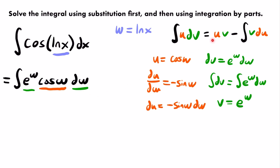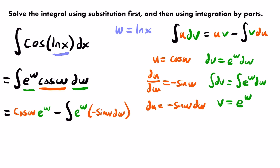Now we rewrite the integral using the integration by parts formula. We get u times v, which is cosine w times e^w, minus the integral of v du, which is e^w times negative sine w dw. The two negatives cancel, giving us cosine w times e^w plus the integral of e^w times sine w dw.